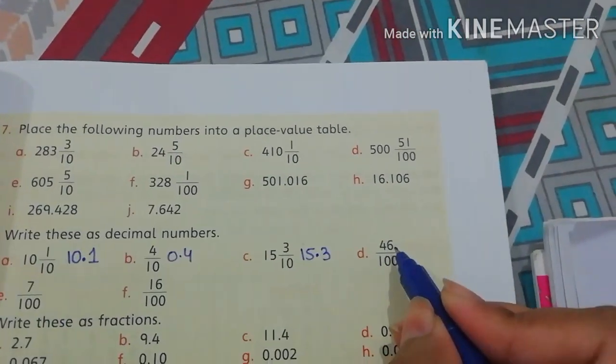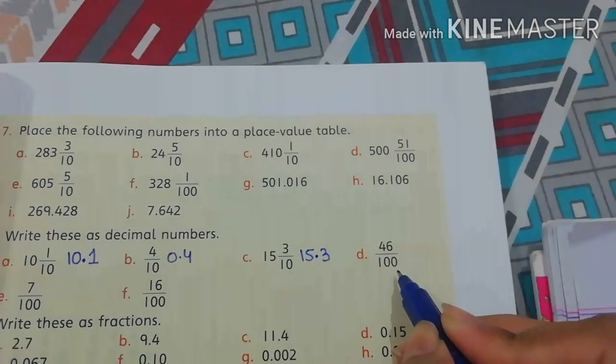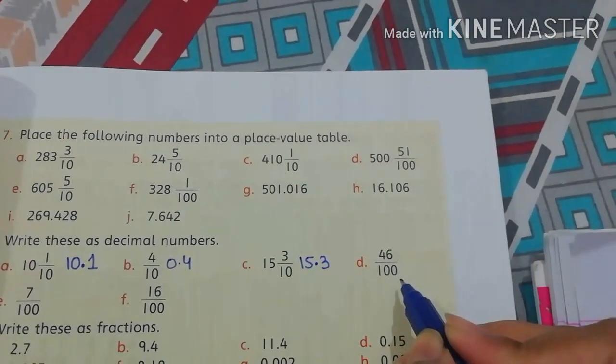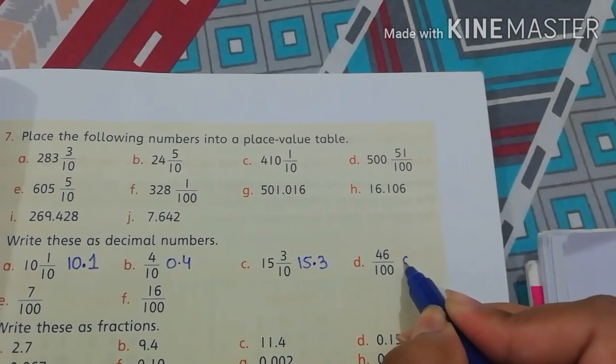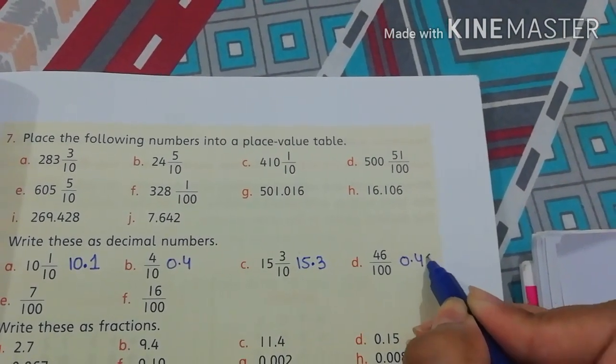Part D, 46 by 100. In 100, we place two values after decimal. So, that is 4 and 6. So 0.46.